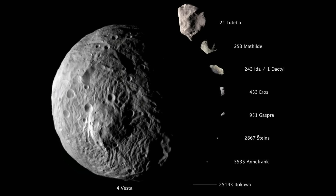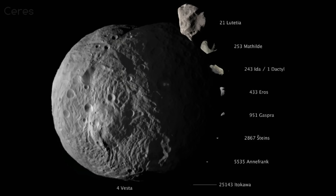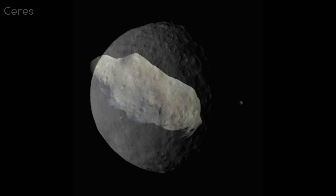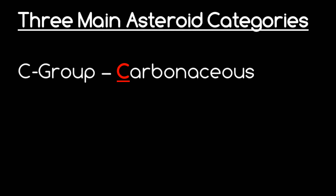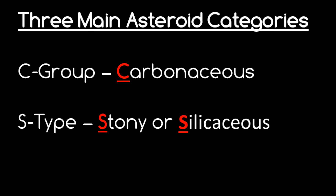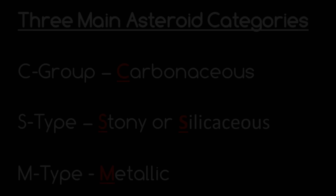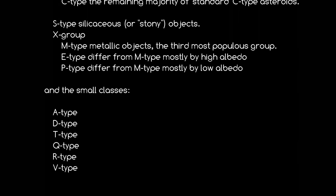Not all asteroids are the same. There's obviously a difference in size, from dust particles all the way up to the biggest known asteroid which is almost 1,000 kilometers in diameter. Asteroids are also classified based upon their spectrum or color, which often indicates what they're made of. There are three main spectral categories: the C group, which are dark carbonaceous asteroids; the S type, which are stony or silicaceous asteroids; and the M types, which are metallic asteroids. There are other types too, but these are the three main categories.